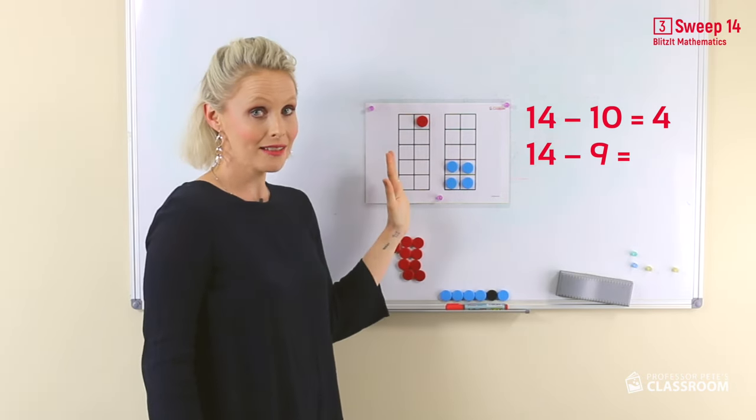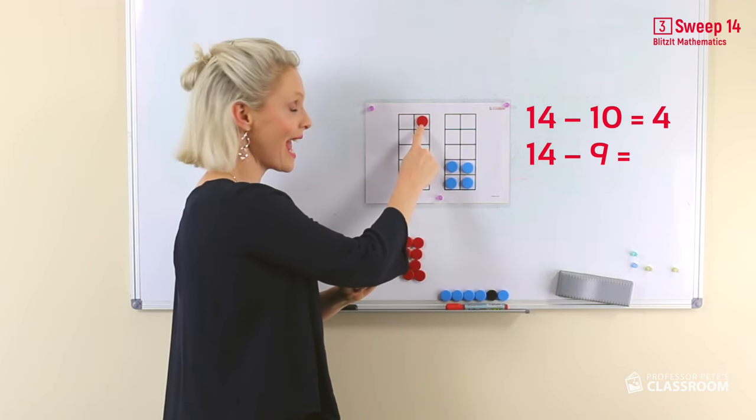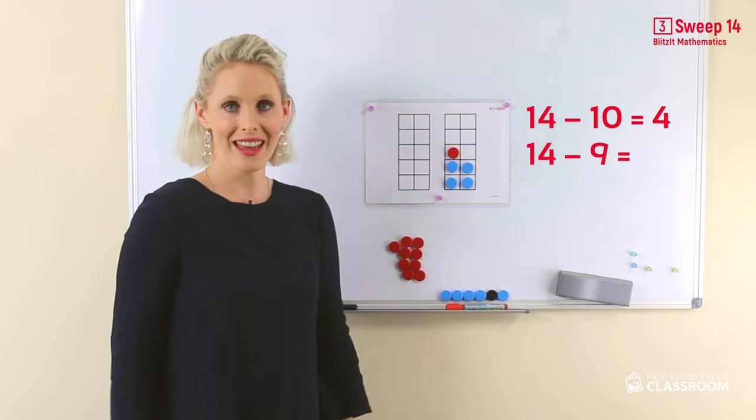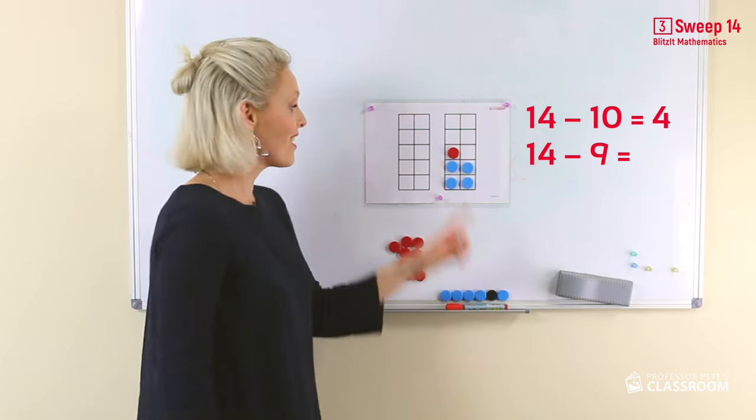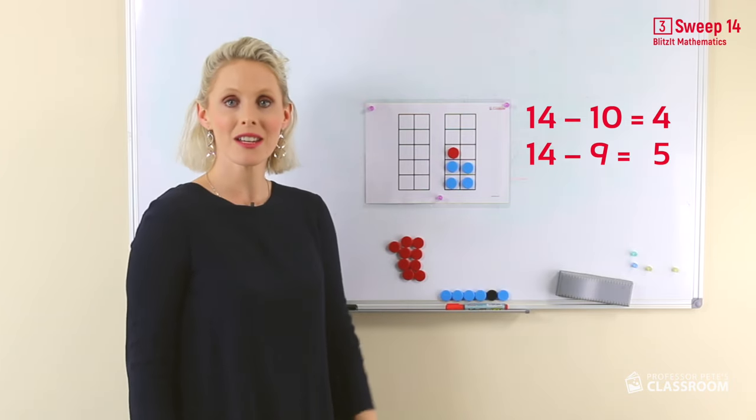I've taken away 9. There's one more, which would be the 10. We add it over there. And what's the answer? 5. 14 take away 9 equals 5.